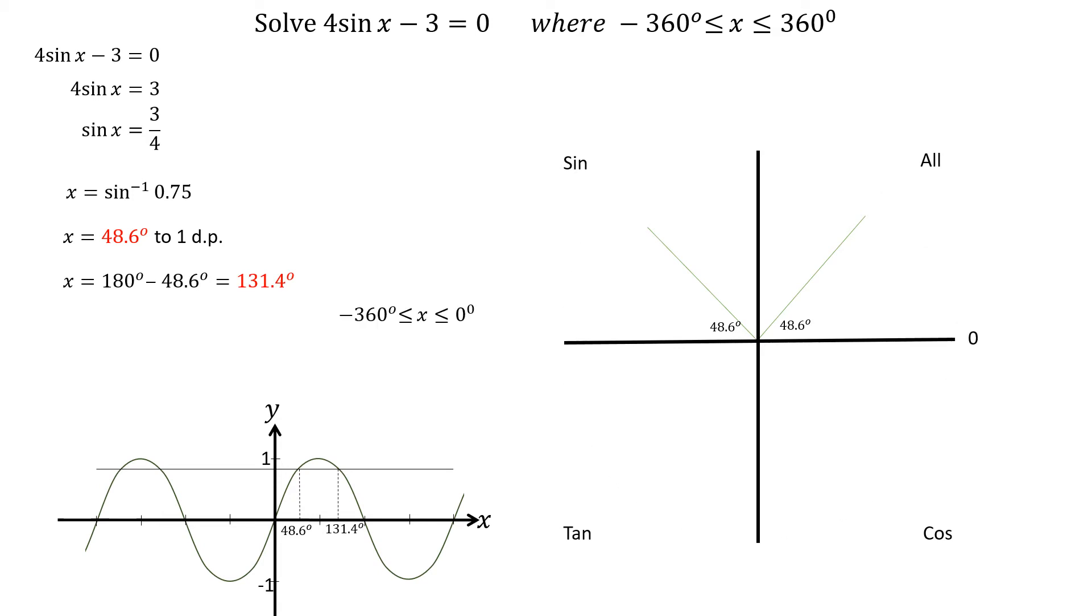Next, we go in a clockwise direction from 0 to find the solutions between 0 and minus 360 degrees. The first angle in this direction is at minus 180 degrees minus 48.6 degrees, which is minus 228.6 degrees, and the last angle is at minus 360 degrees plus 48.6 degrees, which is minus 311.4 degrees.